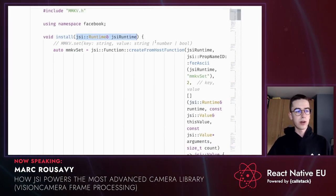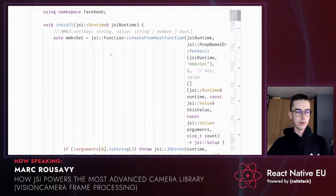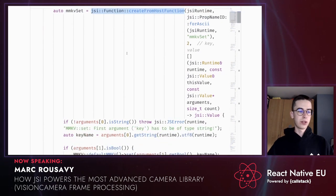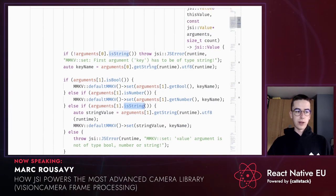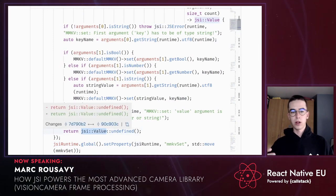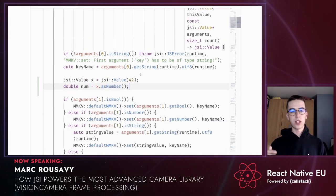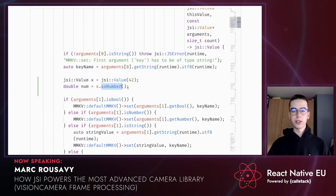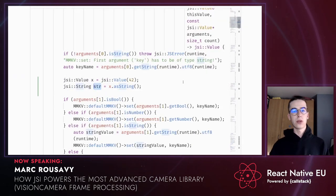The install function receives a JSI runtime reference, and you can use this reference to install variables into the global namespace. In this case, we install the MMKVSet function as a JSI host function, which simply sets a value to the MMKV storage instance. We can check argument types using isBool, isNumber, isString, and we can also throw JSI errors. At the end, we always return a JSI value — if we don't want to return anything, we return undefined. To convert JSI values: asNumber returns a double, same for booleans, and asString returns a jsi::String — you can also convert it to a std::string using the utf8 function.